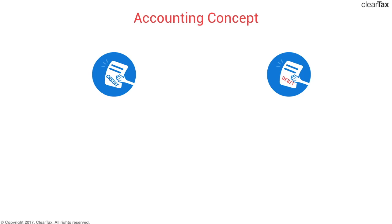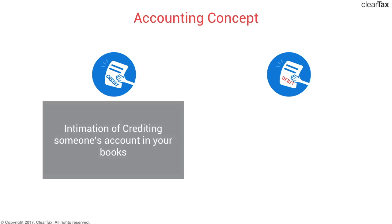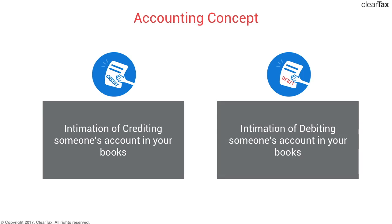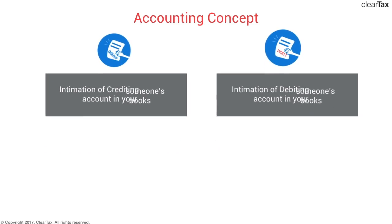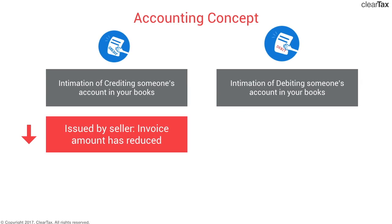Moving to credit and debit notes — a credit note is an intimation of crediting someone's account in your books of accounts. For example, if you have a ledger for party A, you send a credit note stating that you are passing an entry crediting A's account. If a credit note is issued by the seller, it means the invoice amount has reduced — the seller's asset (the amount receivable from the recipient) decreases, so the seller will collect a lesser amount from the recipient.